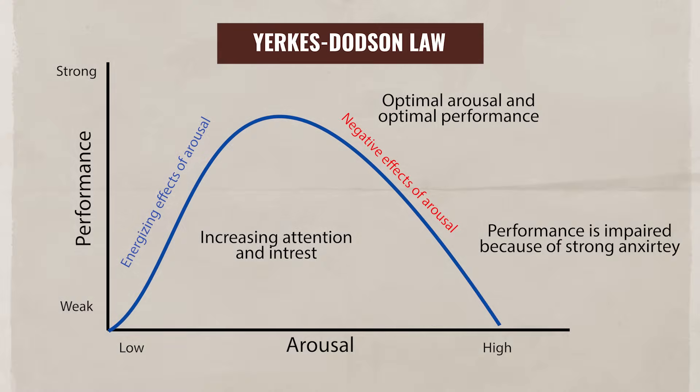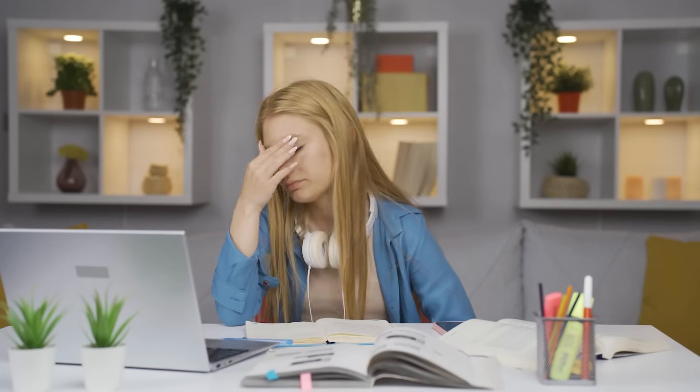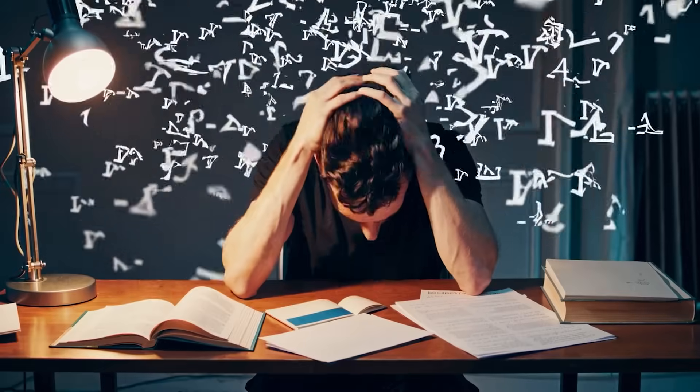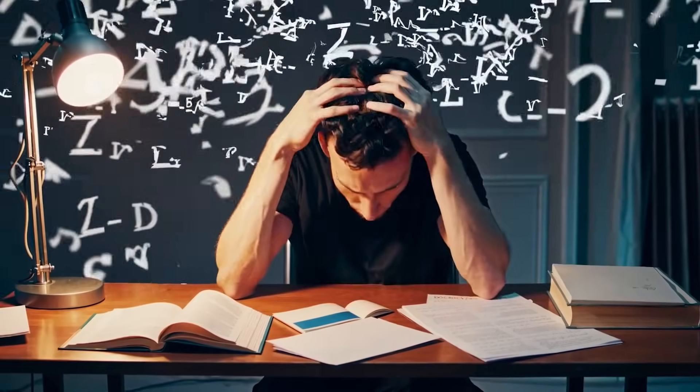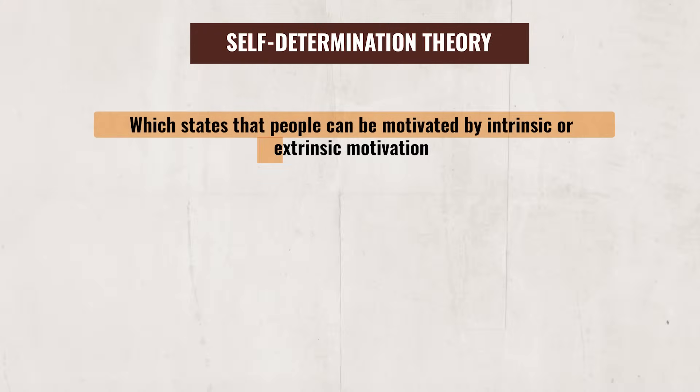Individuals are constantly evaluating their situations and adjusting their behaviors to reflect their arousal level, with the goal of finding the optimal arousal level where their performance is best. For example, a slight amount of stress before a test can help motivate you to study and help you focus. But an excessive amount of stress and anxiety can cause you to freeze, resulting in studying less and doing worse on the test. So we can see that motivation is complex — sometimes it comes from external factors, and sometimes it comes from within.